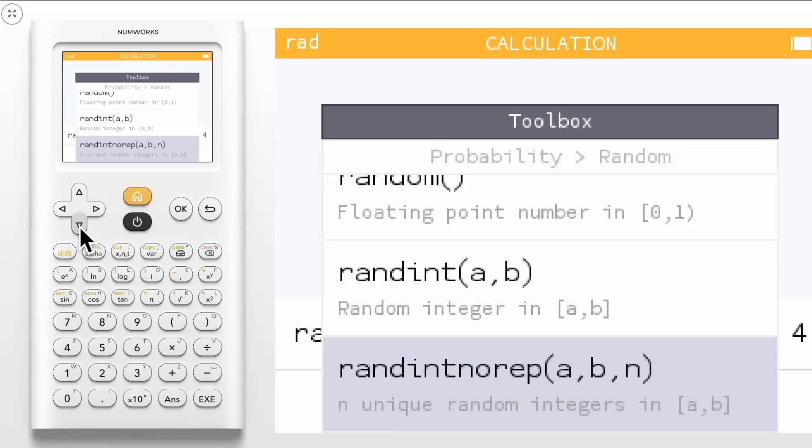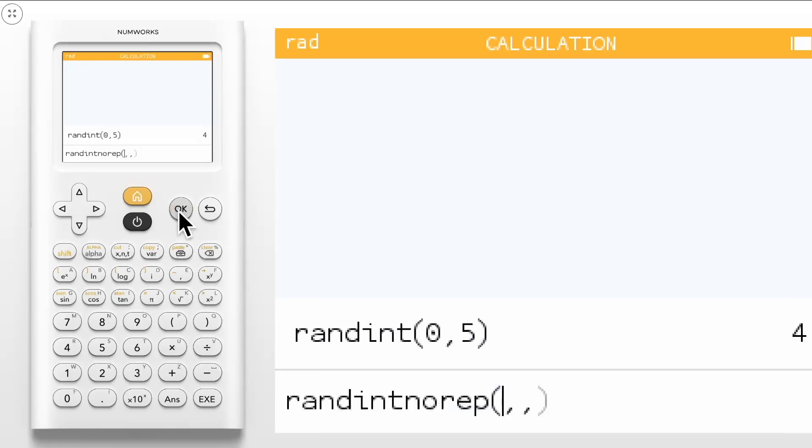if we wanted three random numbers that were not repeated between 0 and 5, we would choose randint no-repeat and input 0 again. Then navigate past the comma and input 5 for your parameter, and then the last value you input is how many numbers you want. So in this case, 3.